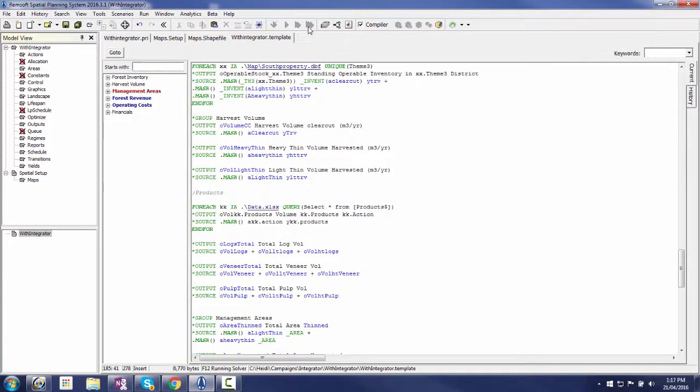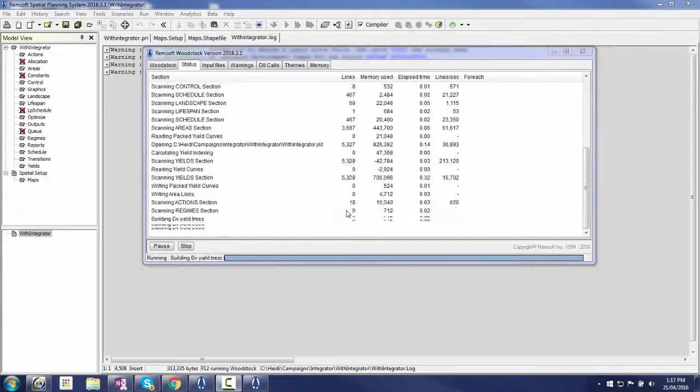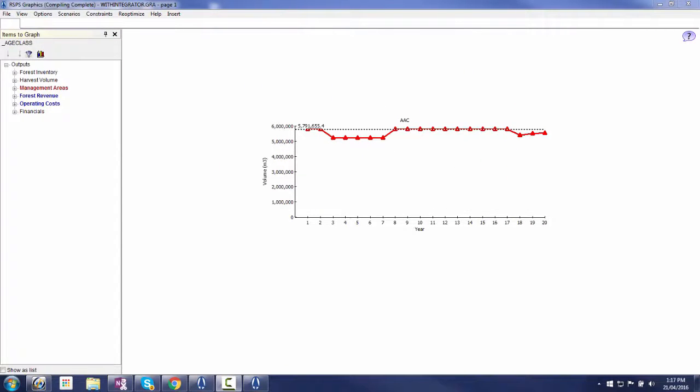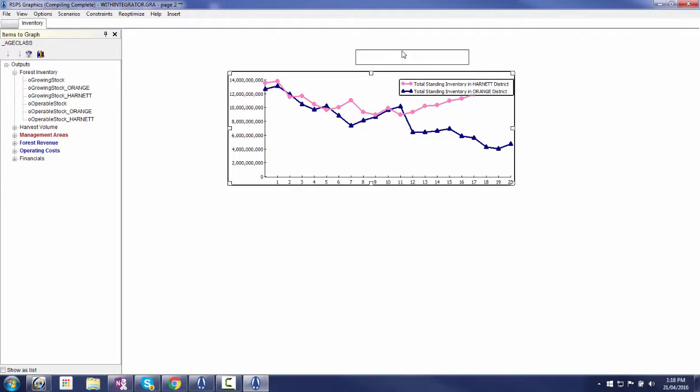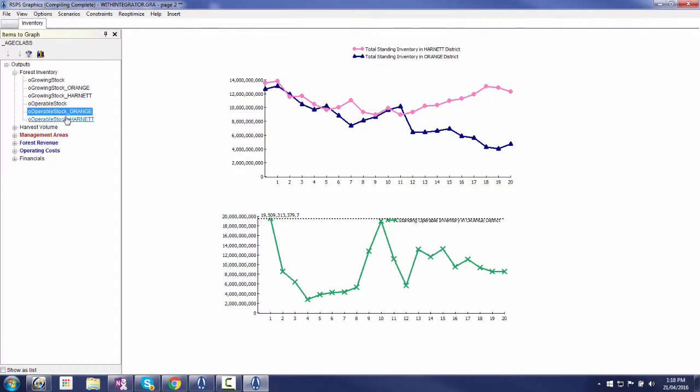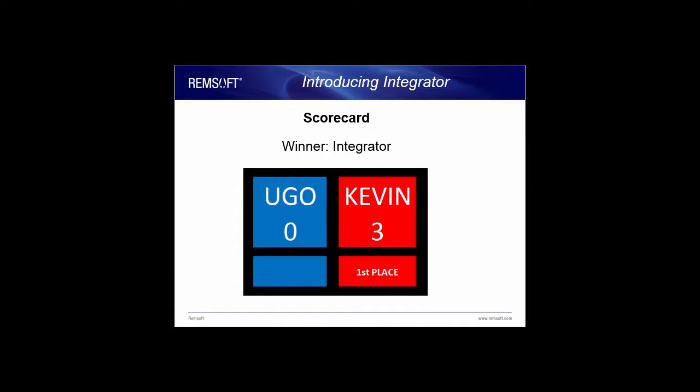Now Kevin runs and solves the new model, and builds two output graphs for inventory to ensure the results are isolated to just the two new management districts. Kevin completes the model build in just one minute and 48 seconds, winning the challenge and the competition. The final score is 3-0 for Kevin and the integrator.